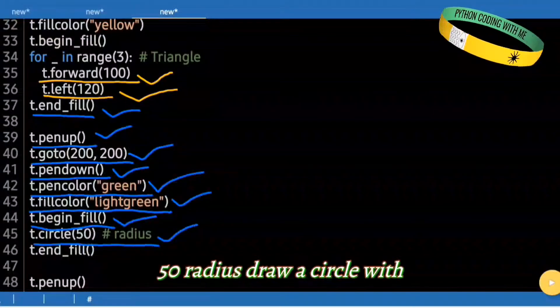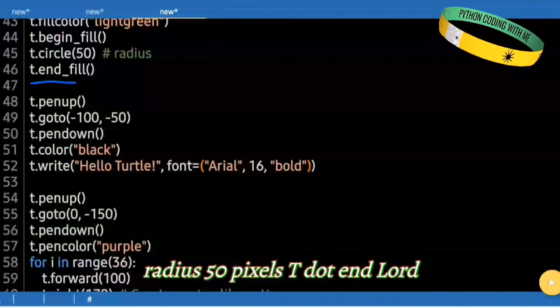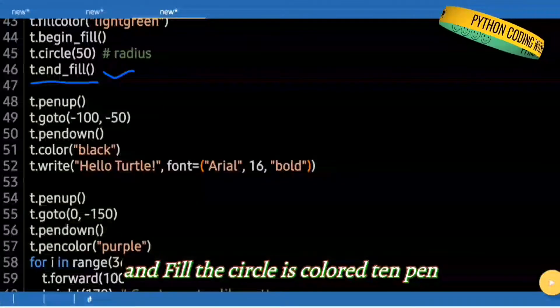t.circle(50). Draw a circle with radius 50 pixels. t.end_fill(). The circle is colored.